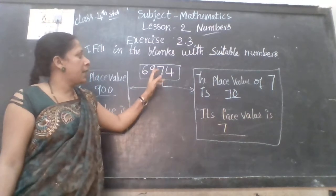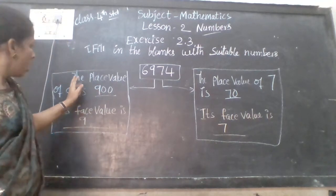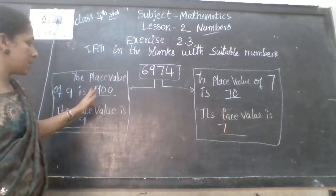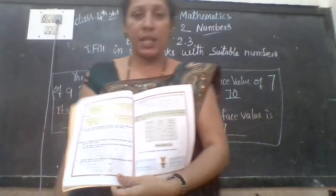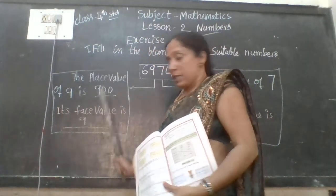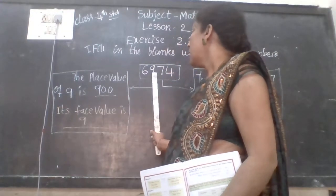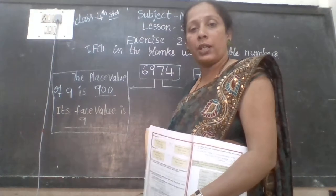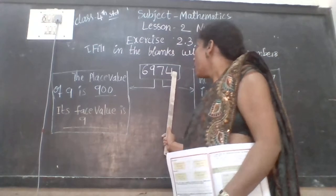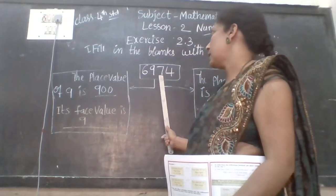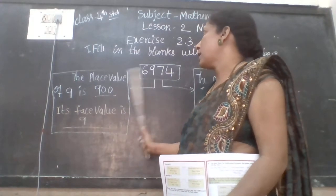6,974 is the number. The place value of 9 is dash — in the book only dash is there. The answer is 900. How can you find out? Observe this number: 4 is in the units place, 7 is in the tens place, 9 is in the hundreds place. So the place value of 9 is 900.